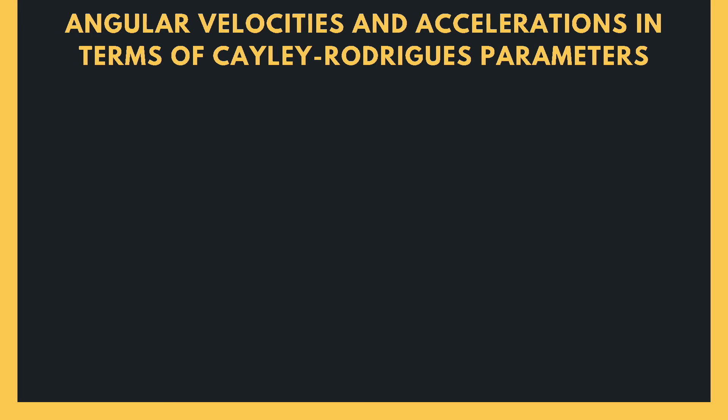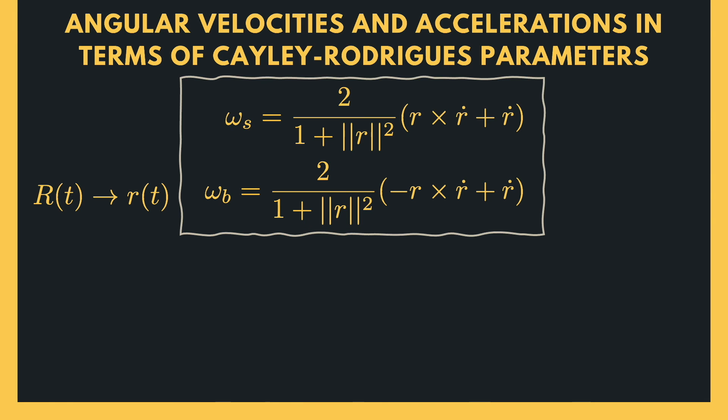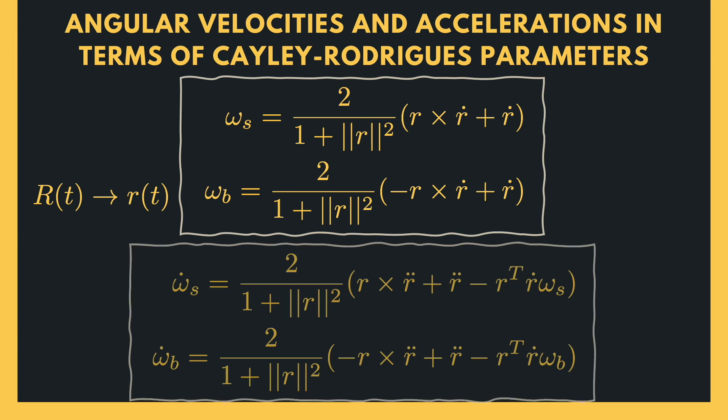Another interactive feature of Cayley-Rodriguez parameters is that angular velocities and accelerations have a simple form in terms of them. If r(t) is the Cayley-Rodriguez representation of the orientation trajectory R(t), then the angular velocity expressed in the space frame and body frame can be expressed as these equations. By time differentiating these expressions, we can get the angular accelerations with respect to the space and body frames. In the coming lessons, we will study more about angular velocity and accelerations. For now, we just want to learn that they have rather simpler forms in terms of Cayley-Rodriguez parameters.